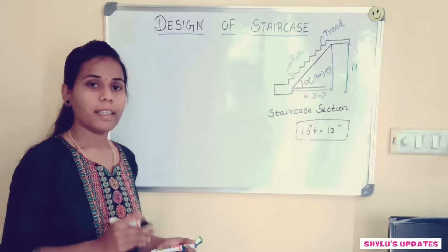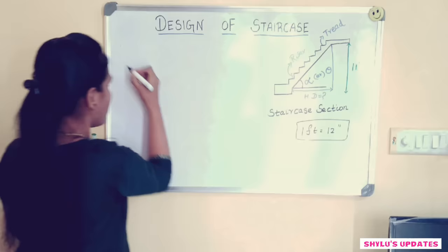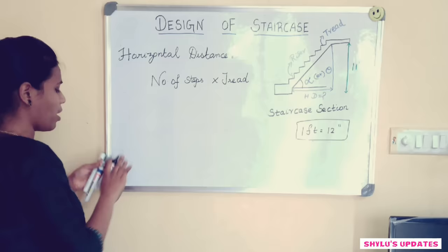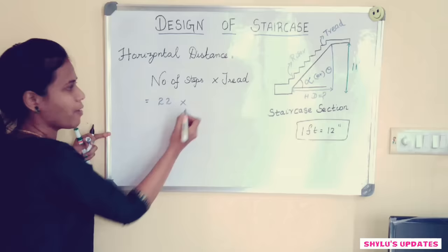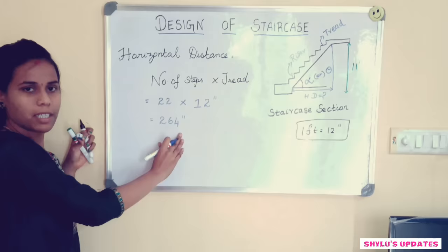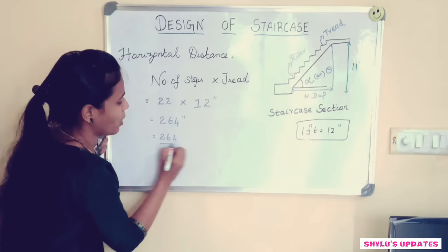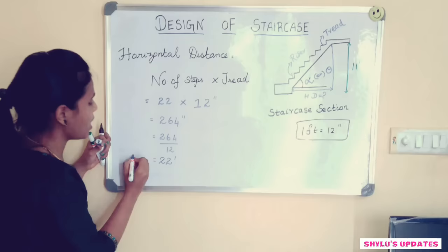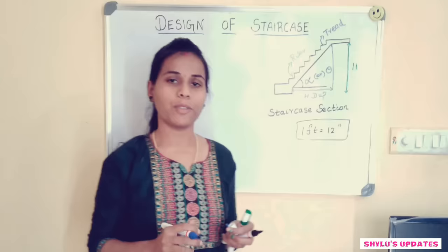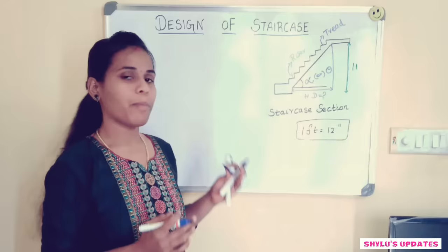The last step in staircase design is to find the horizontal distance. The formula is: number of steps multiplied by the tread. We know the number of steps is 22 and the tread is 12 inches, so the answer is 264 inches. Converting to feet: 264 divided by 12 equals 22 feet. So the horizontal distance is 22 feet.